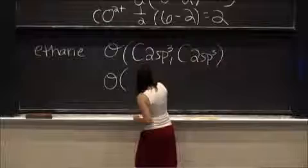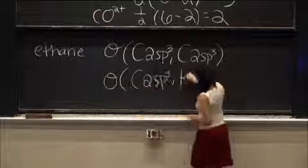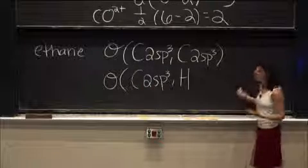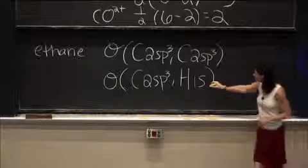So again, our carbon is going to be 2sp3, and what will our hydrogen be? 1s, we don't have to hybridize it, it already has only one unpaired electron in a 1s orbital.